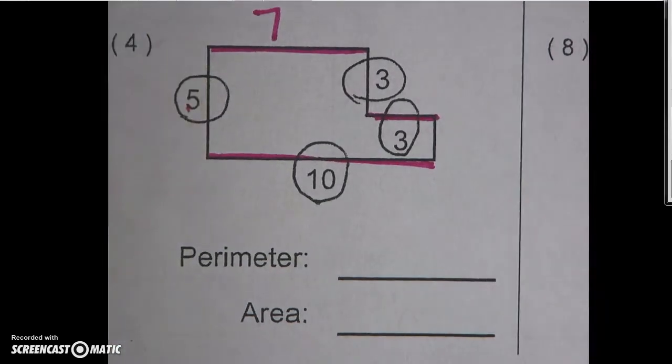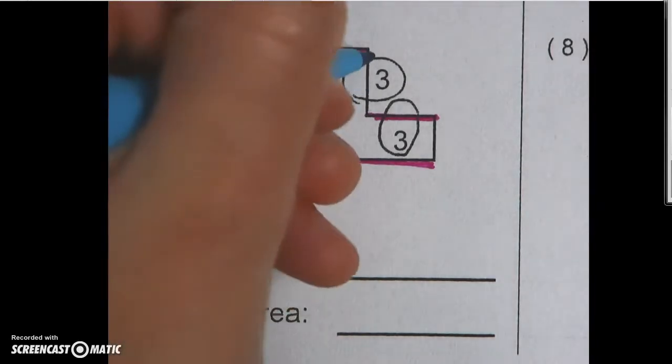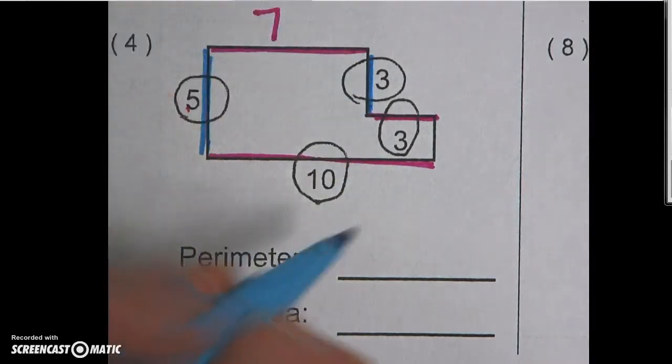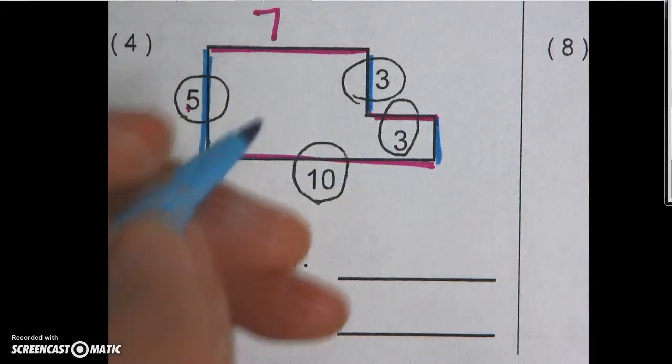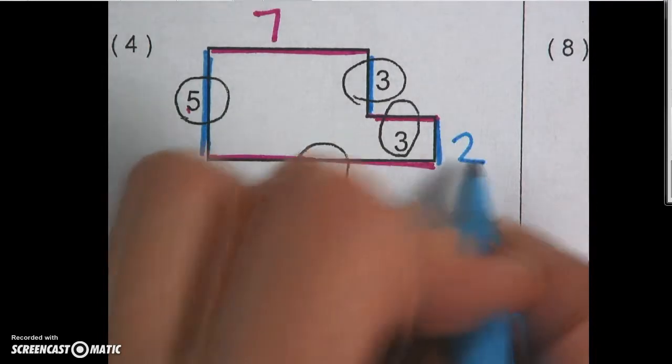Looking at my length, this whole length here is 5 and this little chunk of it is 3. So since 3 plus 2 is what would give me 5, I'm going to plug in a 2 here.